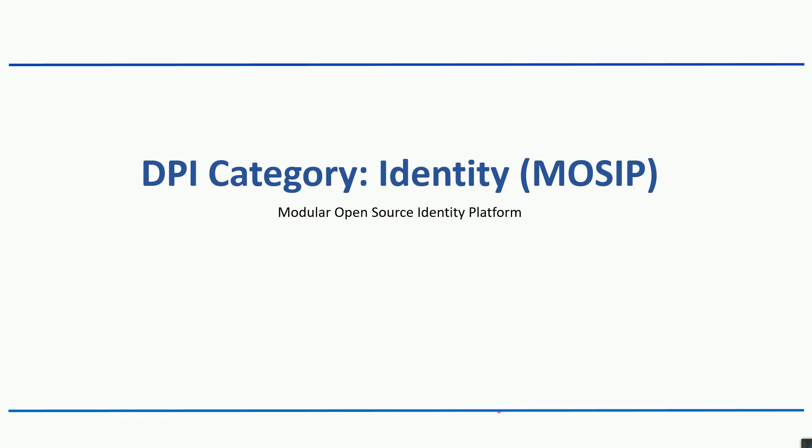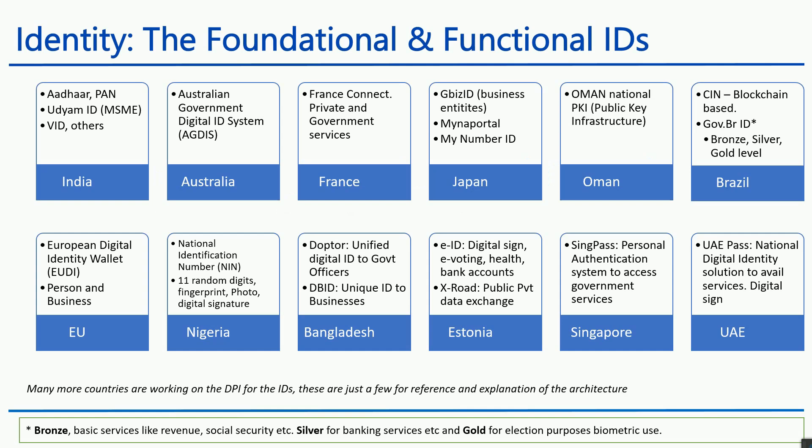In this video we will understand about digital public infrastructure category identity, which is mostly built on MOSIP, also called Modular Open Source Identity Platform. It is a well-documented system through which multiple countries can build their own identity layer. Identity could be foundational and functional as well.